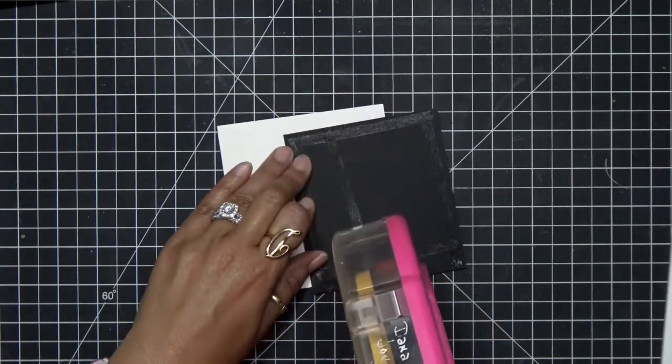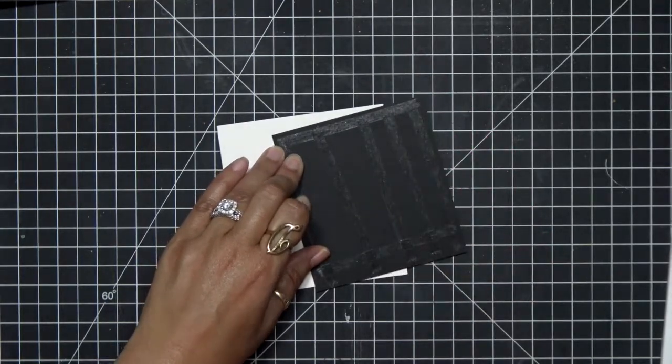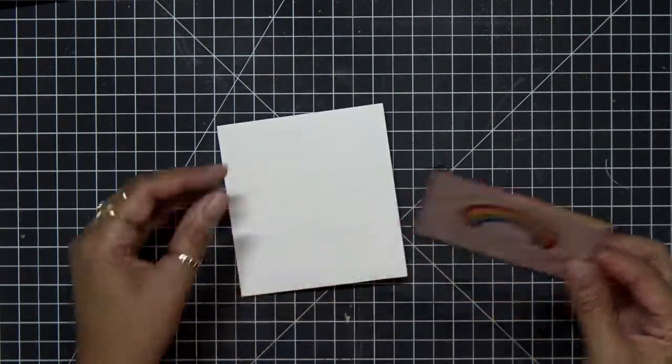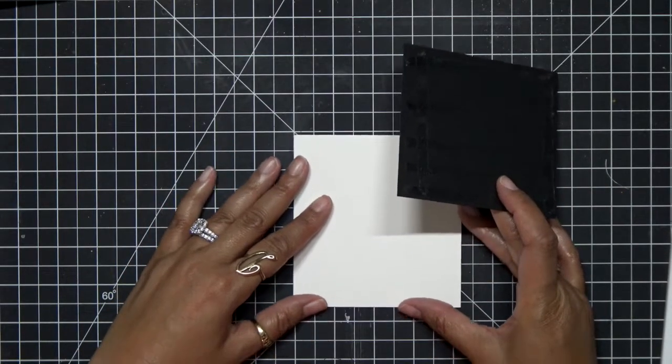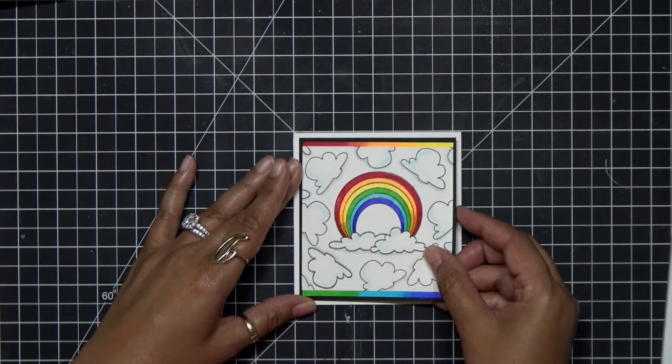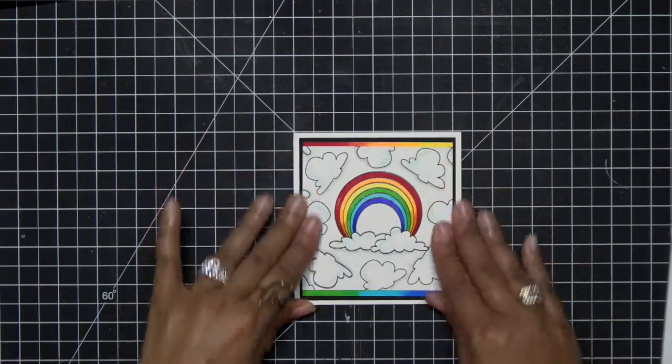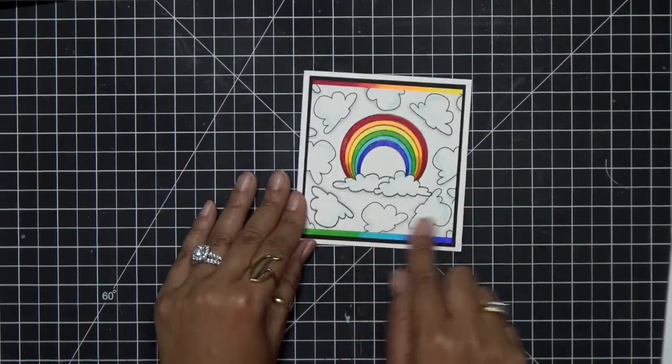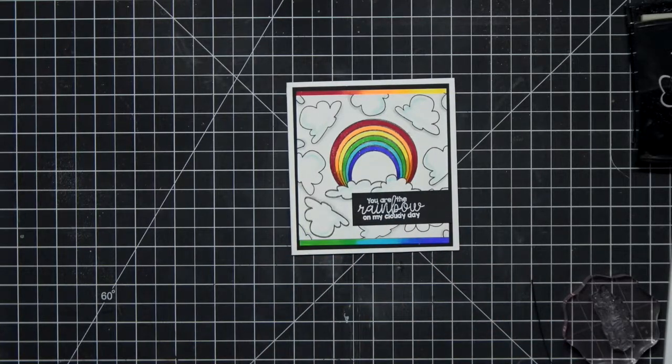I'll go ahead and pop this up onto that white card base. And we're going to have such a pretty card. Now, since I have two of these, you saw I already made one, I would be willing to send this one to one of my crafty friends. Just make sure you leave a comment below on how you like to incorporate rainbows into your crafting. And I'll be sure to pick a winner and send this card to you.